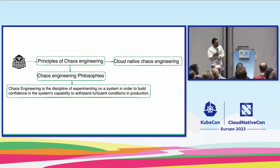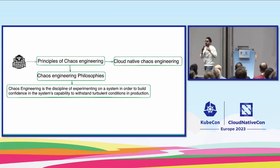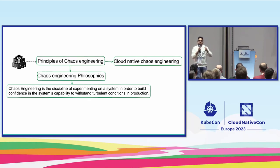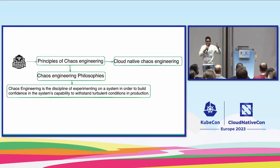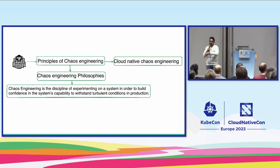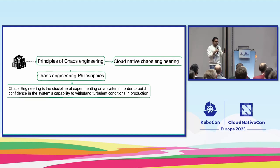Chaos engineering is not something very new. You must have heard of chaos monkey — Netflix originated it in 2010 — so it's more than 13-plus years old. The technology itself is not new; it's been there. It has been getting more mature with respect to cloud native. Cloud native chaos engineering wasn't there because cloud native wasn't there previously. Since the applications have matured and the systems have matured, so is the model and so are the tools. That's where cloud native chaos engineering has come in.